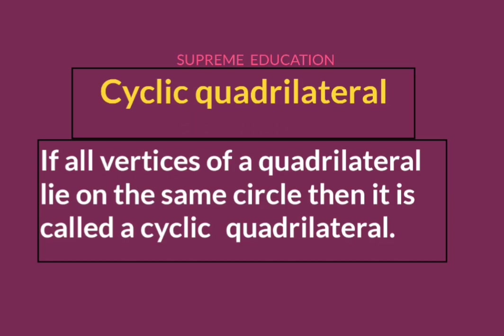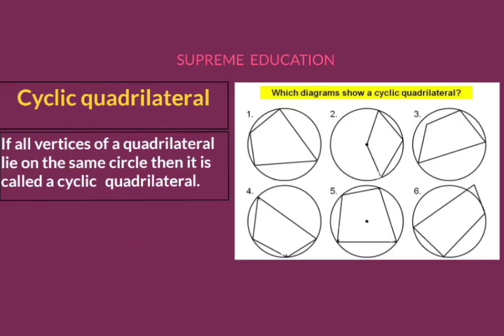Cyclic quadrilateral: if all vertices of a quadrilateral lie on the same circle, then it is called a cyclic quadrilateral. Some diagrams are shown here. The question is: which diagrams show a cyclic quadrilateral? Read the definition again — if all vertices of a quadrilateral lie on the same circle, then it is called a cyclic quadrilateral.